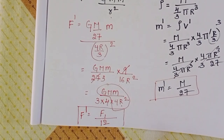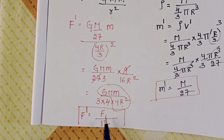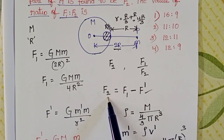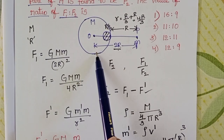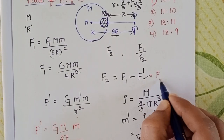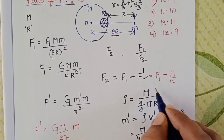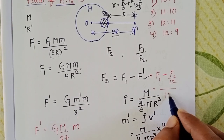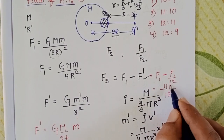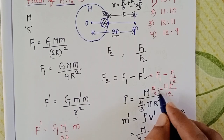The force of attraction between the small removed sphere and the point mass is F1/12. F2 is the gravitational force of attraction between the remaining mass and the point mass, so F2 = F1 − F1/12. With LCM 12: (12F1 − F1)/12 = 11F1/12.